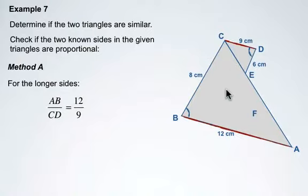And if we take a look at that ratio we have 12 over 9, which can be reduced to 4 over 3.